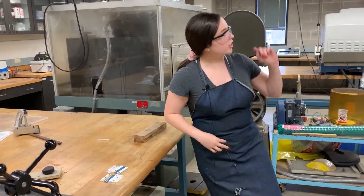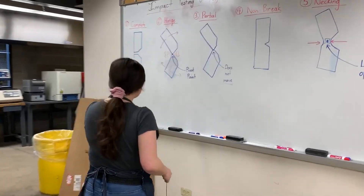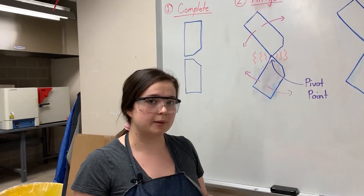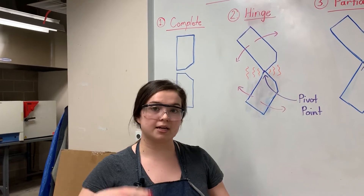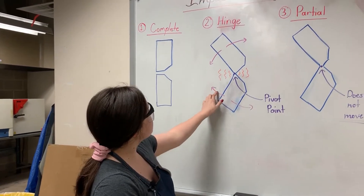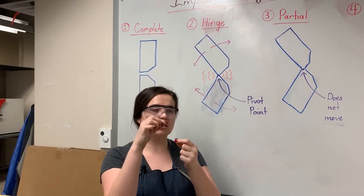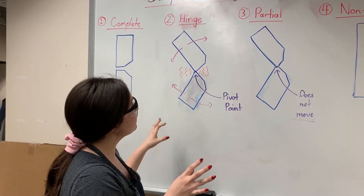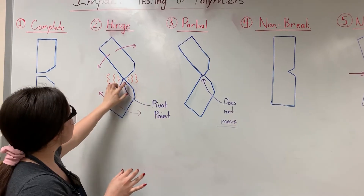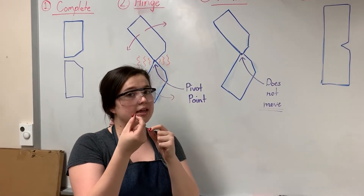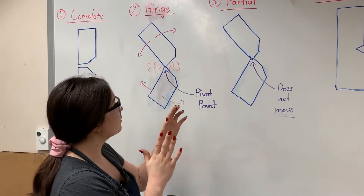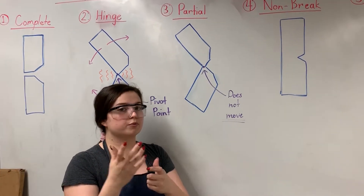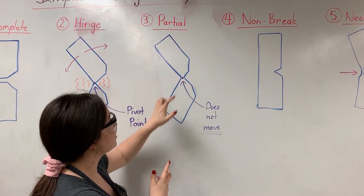The different failures that can occur are over here on the board. We have a complete fracture — these usually happen when you have a very glassy specimen, it has a clean break and doesn't take a lot to fracture it. Then there's a hinge break — it's kind of like a Pac-Man type of thing where you're able to move it back and forth and it has a pivot point. A hinge fracture is at the very edge of the polymer itself, whereas a partial break doesn't have that Pac-Man-like movement and has a little bit of extra material.